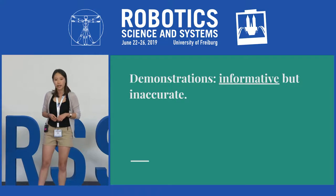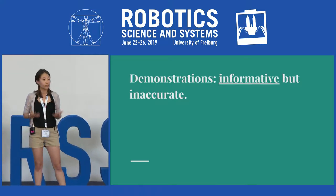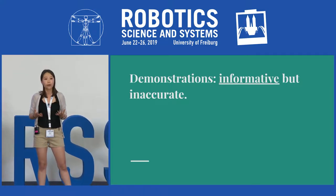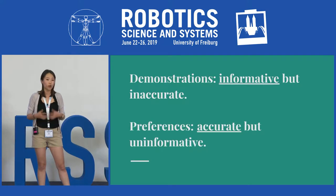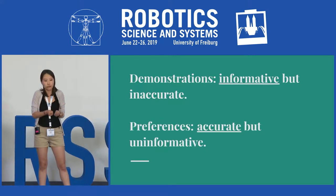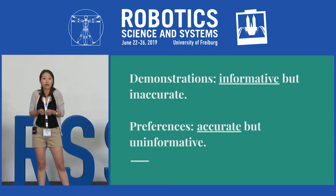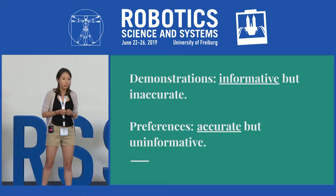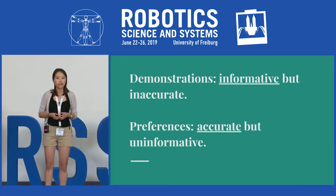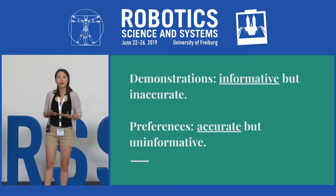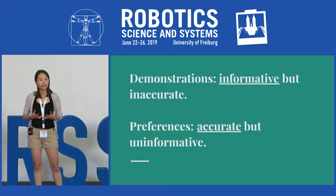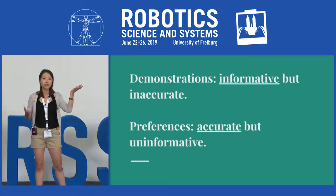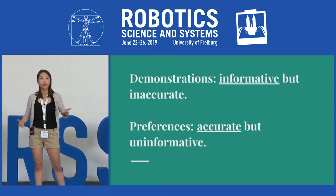Our key insight is that demonstrations are rich in information but are relatively inaccurate. On the contrary, preferences are really accurate, but each individual preference query is relatively uninformative. Note how their strengths and weaknesses are complementary. So we ask whether we can combine information from both in such a way that amplifies their strengths and demolishes their weaknesses. And we think we can.